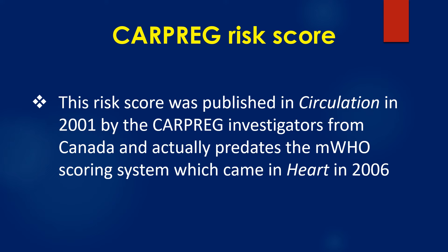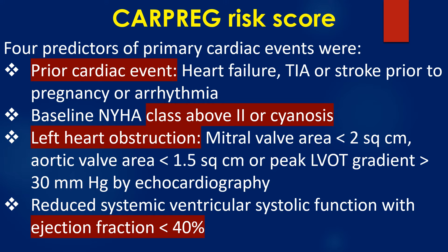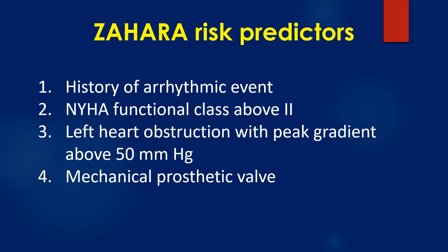The CARPREG risk score was published in Circulation in 2001 by the CARPREG investigators from Canada, and predates the MWHO scoring system which came in 2006. The four predictors of primary cardiac events were: 1) prior cardiac event including heart failure, TIA, stroke, or arrhythmia prior to pregnancy; 2) baseline NYHA class above 2 or cyanosis; 3) left heart obstruction with mitral valve area less than 2 cm², aortic valve area less than 1.5 cm², or peak LVOT gradient more than 30 mmHg on echocardiography; and 4) reduced systemic ventricular systolic function with ejection fraction less than 40%.